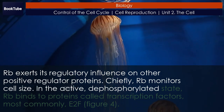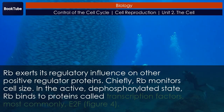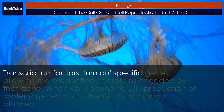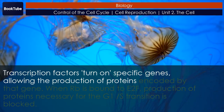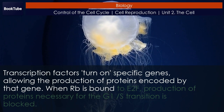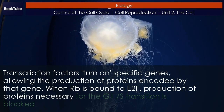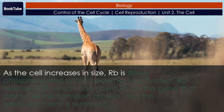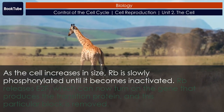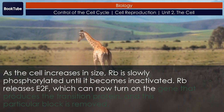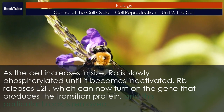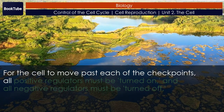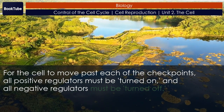As a cell is exposed to more stress, higher levels of p53 and p21 accumulate, making it less likely that the cell will move into S phase. Rb exerts its regulatory influence on other positive regulator proteins, chiefly monitoring cell size. In its active dephosphorylated state, Rb binds to transcription factors, most commonly E2F, blocking production of proteins necessary for the G1/S transition. As the cell increases in size, Rb is slowly phosphorylated until inactivated, releasing E2F, which turns on the gene producing the transition protein and removes this block.